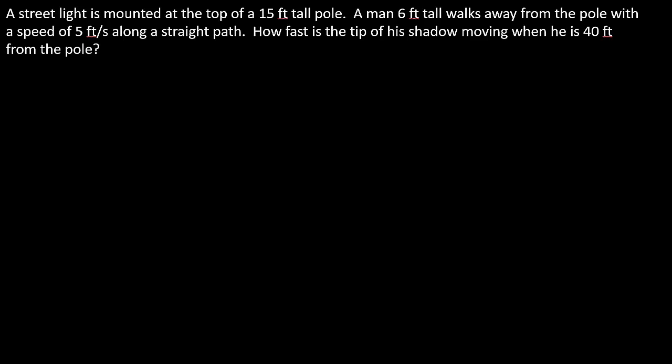Let's take a look at a related rate problem. It says a street light is mounted at the top of a 15-foot tall pole. A man 6 feet tall walks away from the pole with a speed of 5 feet per second along a straight path. How fast is the tip of his shadow moving when he is 40 feet from the pole?